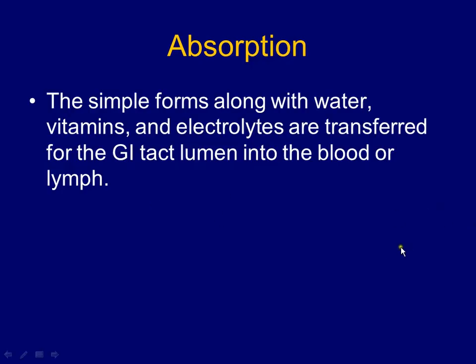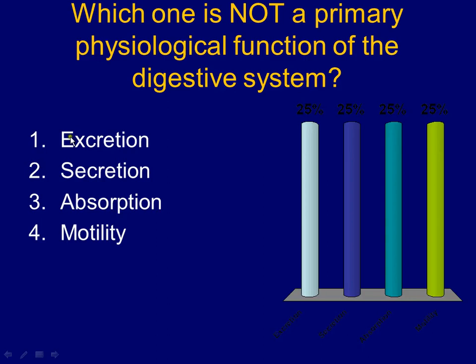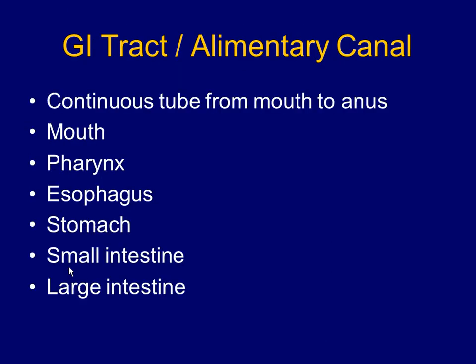Absorption is getting everything from the lumen — the hollow core of the GI tract — into the blood. Your ultimate goal is to get into the blood. If you don't get into the blood, it's worthless — it just follows through your GI tract and you excrete it. Excretion doesn't happen until the very end, so it's not a primary function of every GI organ. The four primary functions are secretion, absorption, motility, and digestion.